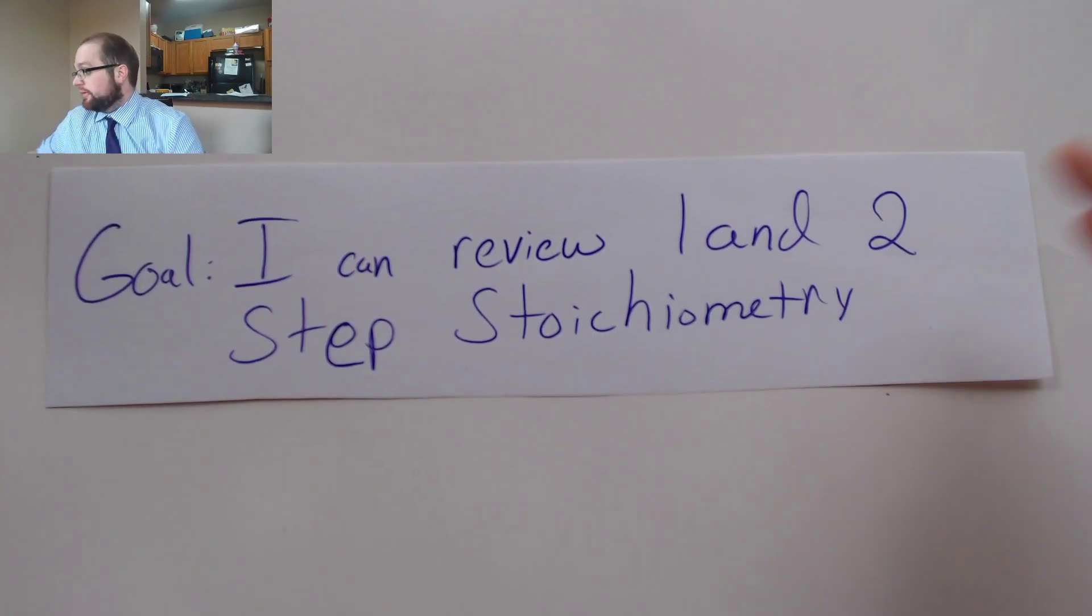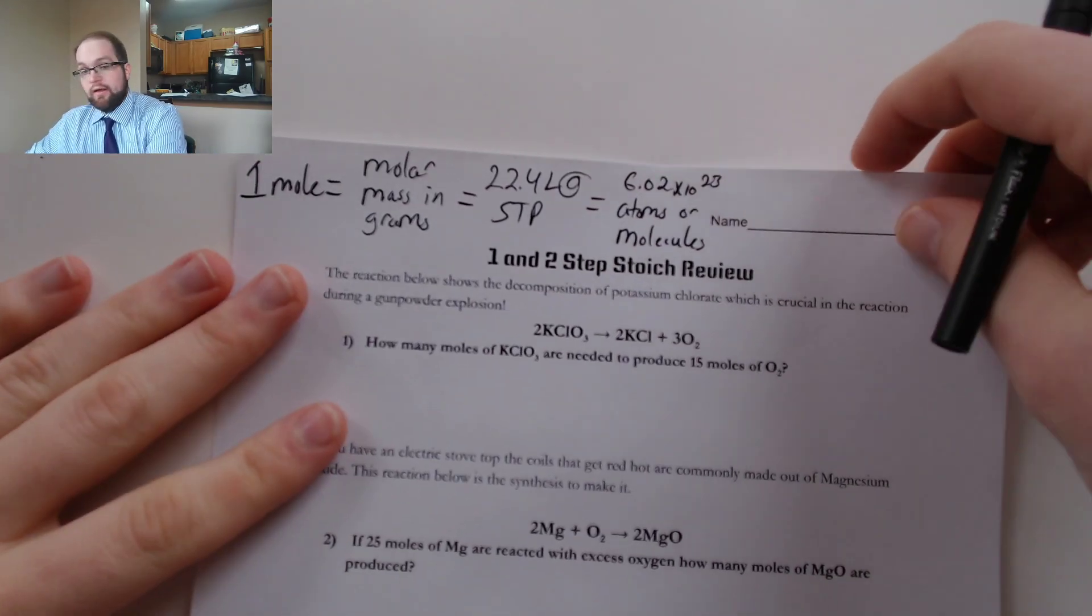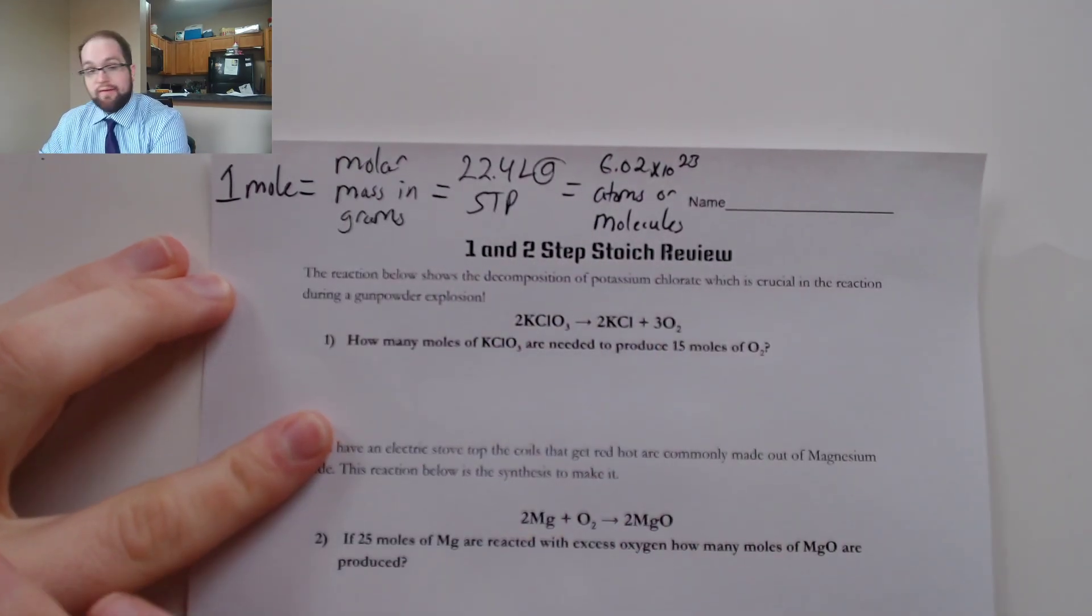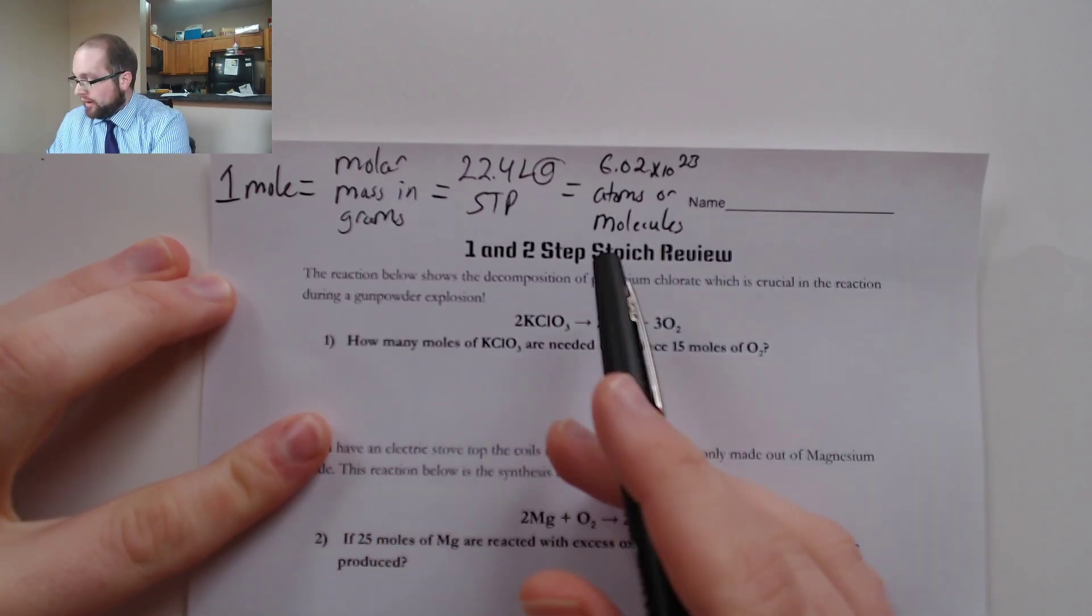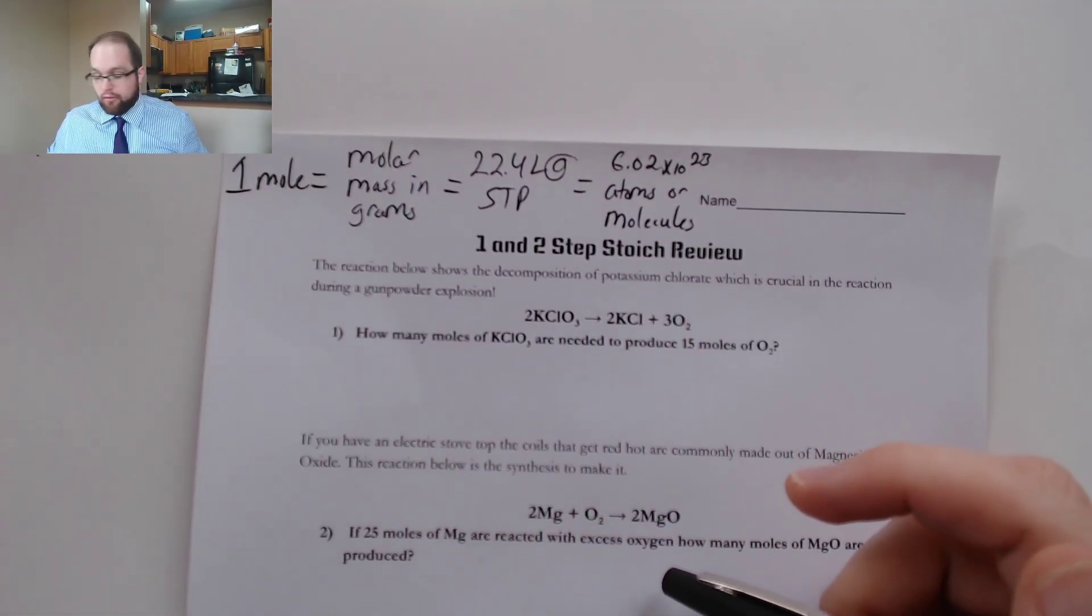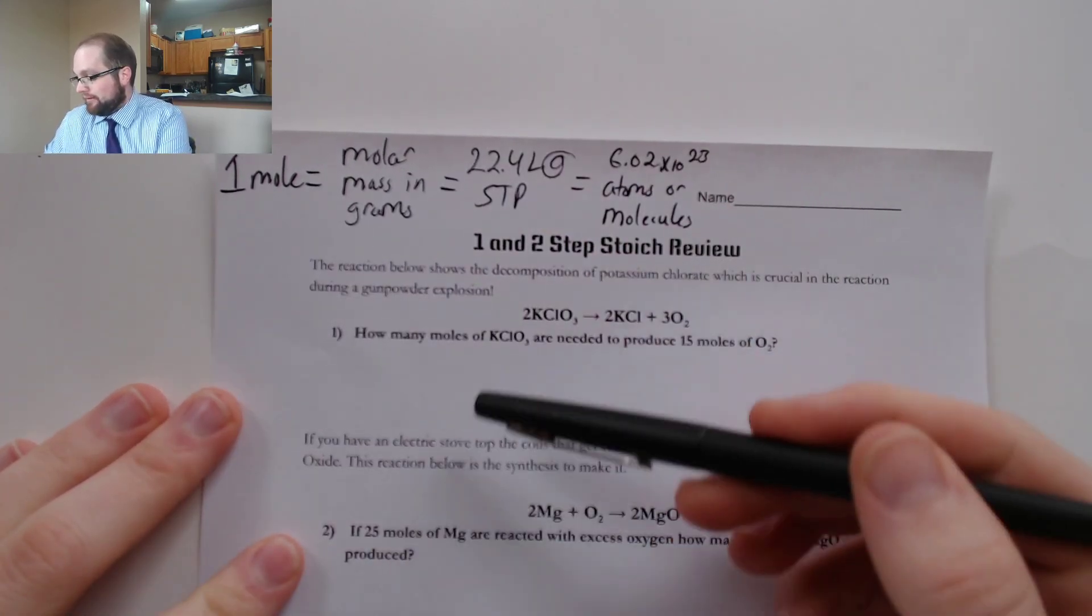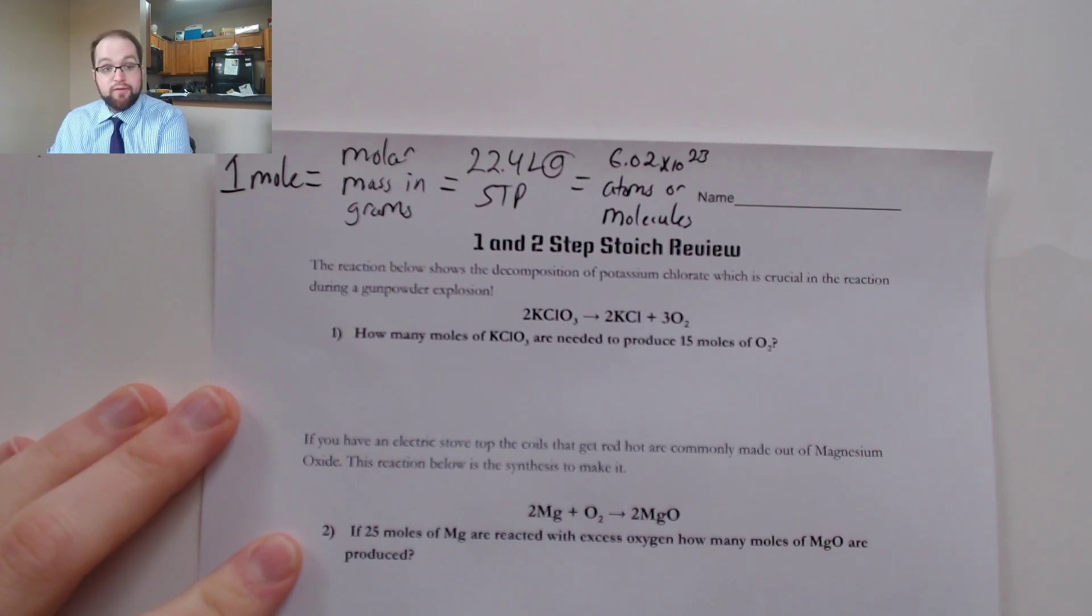In order to do this you're going to want to make sure that you have your one and two step stoichiometry sheet just like I have here. Now you could be printing this out on your own page or you could be writing on a separate sheet of paper or typing on the Chromebook. Either way is acceptable. I'm personally a fan of writing things and I have a printer so it's nice and easy.